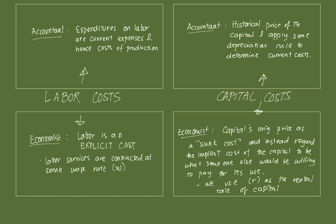With regards to capital, accountants use the historical price of capital and apply some depreciation rule to determine current costs. For example, a company that bought a machine would incur that cost in one period but also needs to factor in that the machine depreciates over time. Economists refer to capital's original price — say the initial price of an oven for a bakery — as a sunk cost, and instead regard the implicit cost of capital as what someone else would be willing to pay for it. Say you rented out that machinery — what would be paid for that oven? We regard that cost to rent as the rental rate of capital, denoted as R. So we have W, the wage rate for labor, and R, the rental rate of capital.